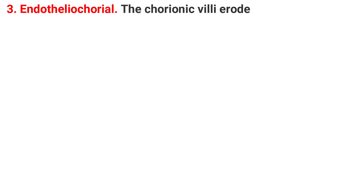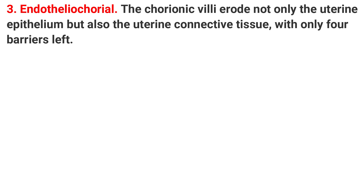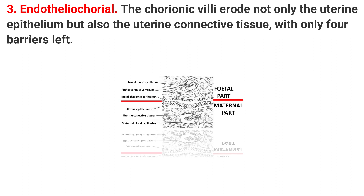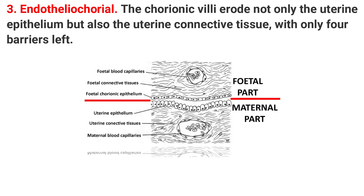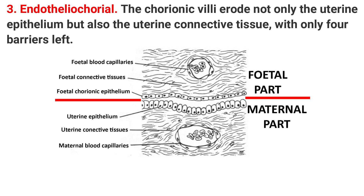The third type is endotheliochorial. The chorionic villi erode not only the uterine epithelium but also the uterine connective tissue, leaving only 4 barriers. Examples are lion, tiger, dog — mostly carnivores.